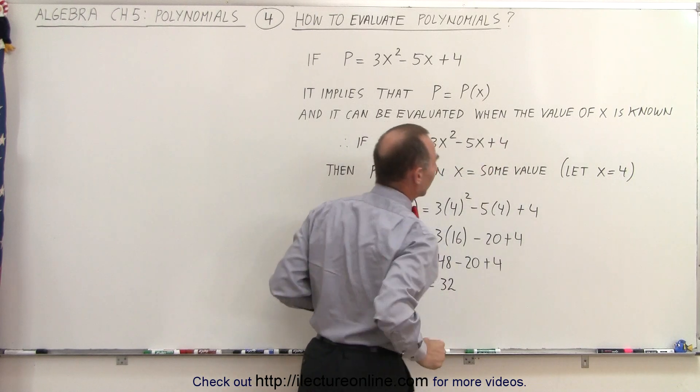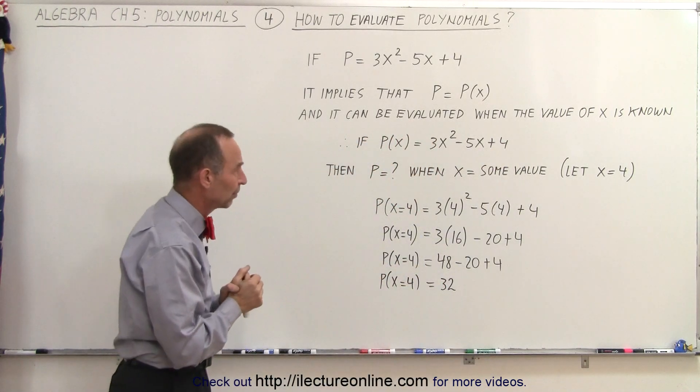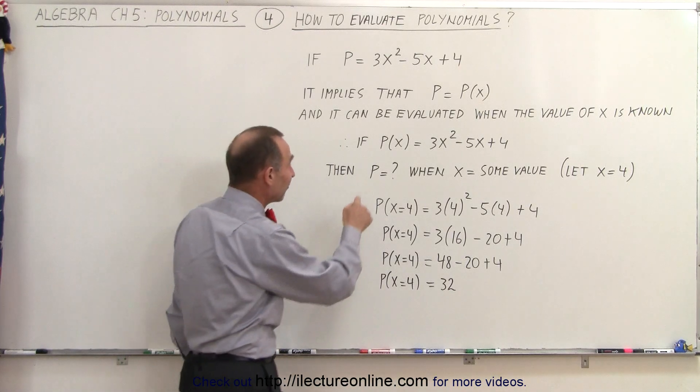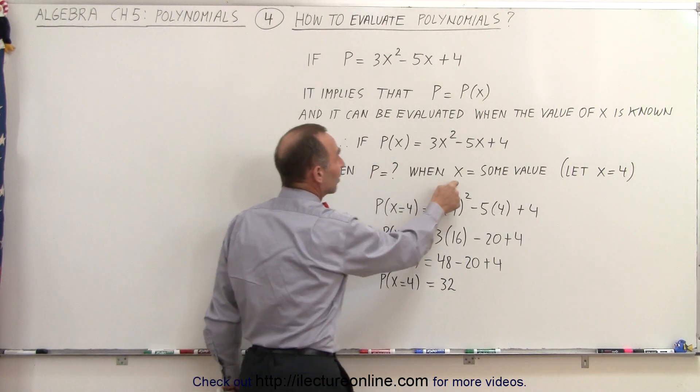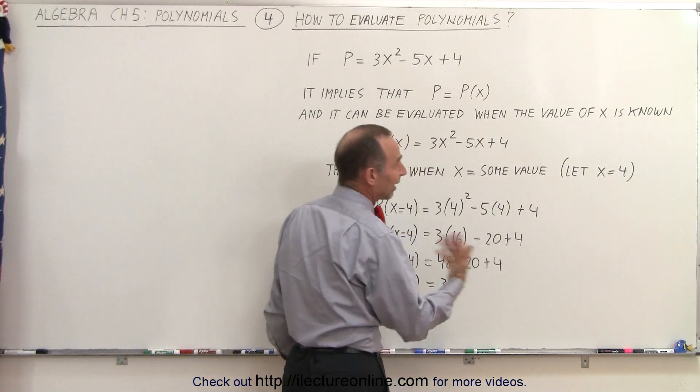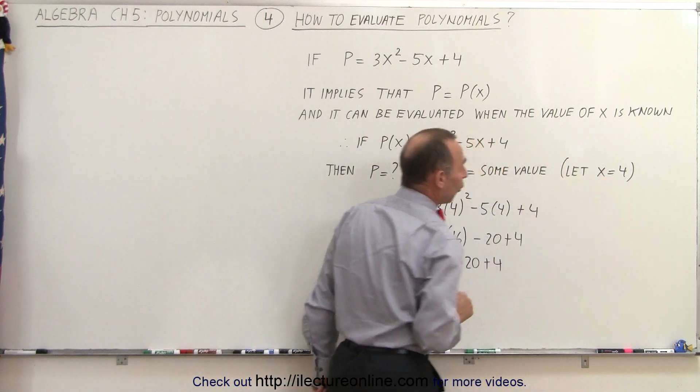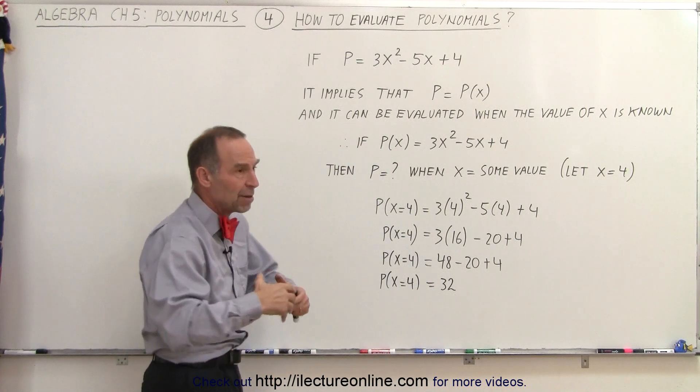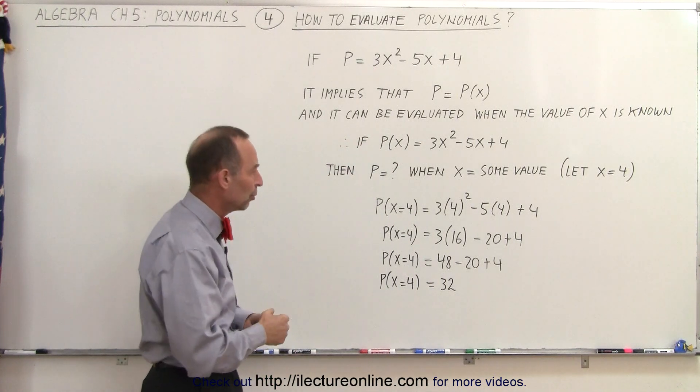So, this is a polynomial, an algebraic expression of three terms. Then, I'm going to evaluate it. In other words, I'm going to find the value of p when x is some known value. Let's say we let x equal 4. If x is equal to 4, what is the value of that polynomial? That's what we mean by evaluating a polynomial.